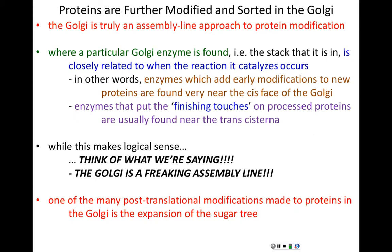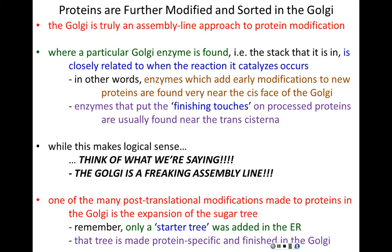One of the many things that happens in the Golgi is the expansion of the sugar tree that was started in the ER. In the ER we only added a small starter tree. In the Golgi, this tree is made protein-specific — expanded with different sugars and branches added to it. That whole huge final sugar tree is finished in the Golgi, but that's only one of many things the Golgi does.